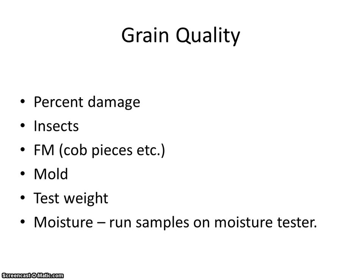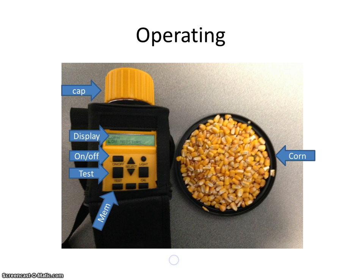We'll also talk a little bit about grain quality. We'll talk about percent damage, insects, foreign material, mold, test weight, and moisture, and how important all of these checks are to make sure the quality of the grain coming into the ethanol facility meets our specifications. And then we're going to actually run a sample on a moisture meter.